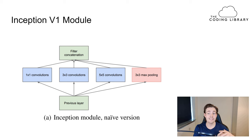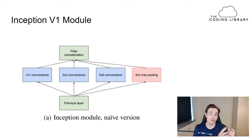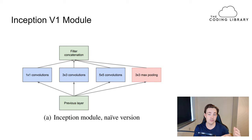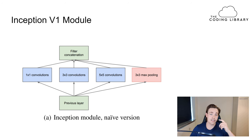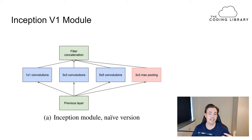We're going to talk about the Inception version 1 module and the idea behind the Inception neural network. In the previous video, we talked about the ResNet architecture, which was about going deeper in neural networks by stacking layers on top of each other. The problem is that stacking standard convolutional layers just keeps adding complexity, making the network too complex to train effectively.